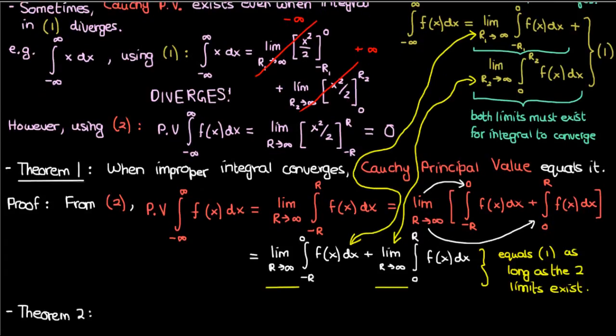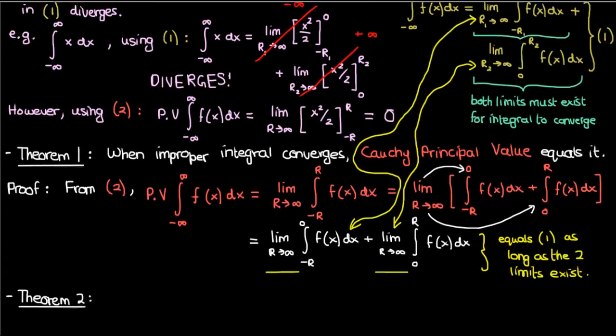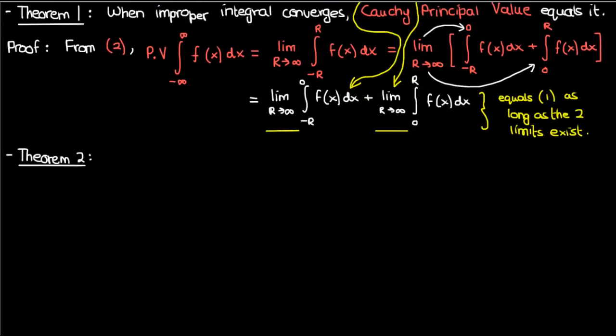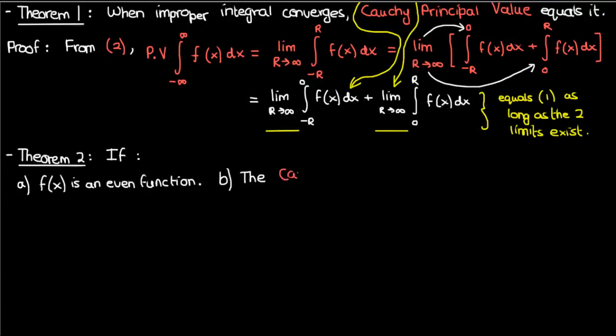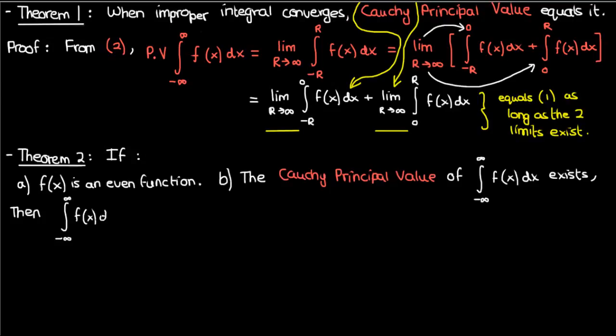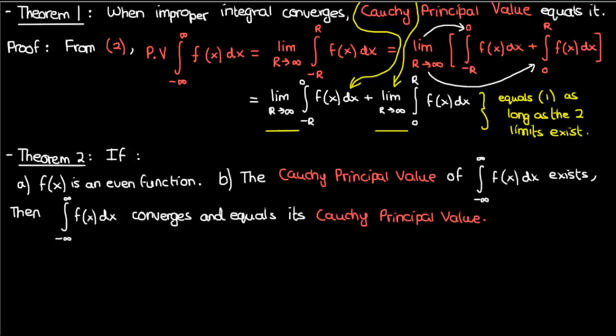Now there's another theorem we're going to prove here before I show you how to use the residue theorem to evaluate improper integrals. This theorem concerns even functions, and it says that if f is an even function, and if the Cauchy principal value of the integral of f from negative infinity to infinity exists, then the improper integral itself converges and equals the Cauchy principal value.